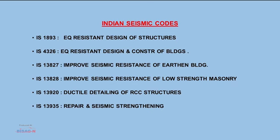Before discussing methodology, please download the relevant IS codes for better understanding of earthquake load patterns. IS 1893, which deals with earthquake loading in all types of structures, is further divided into five parts. Part 1 deals with earthquake analysis provisions for all types of structures. Part 2 covers liquid retaining structures. Part 3 deals with bridges and retaining walls. Part 4 deals with provisions for designing earthquake resistant industrial structures.